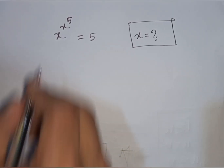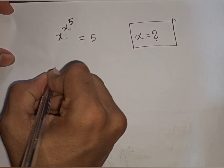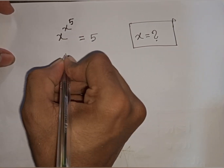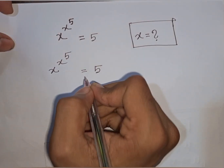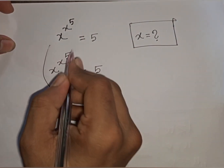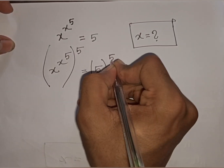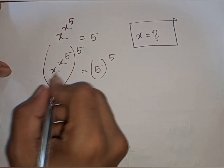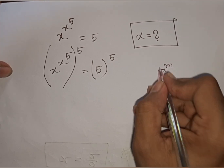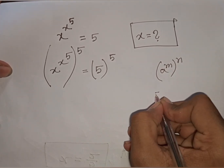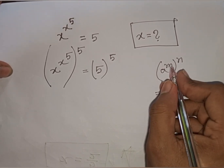How to solve: x power x power 5 is equal to 5. Find the value of x. So we have x power x power 5 is equal to 5. Now we multiply by power 5 on both sides. Here I can apply this exponential rule that a power m, bracket power n, is equal to a power n then bracket power m.